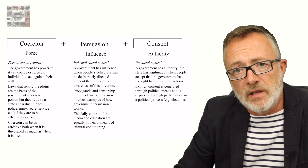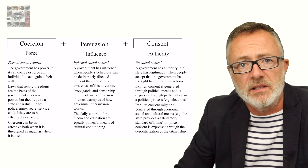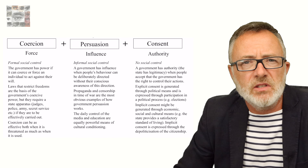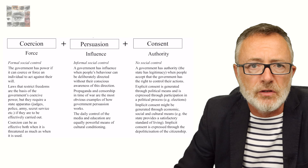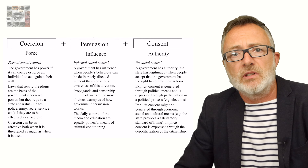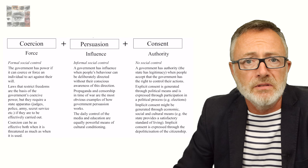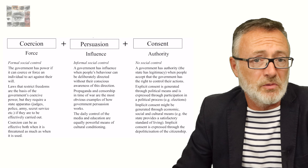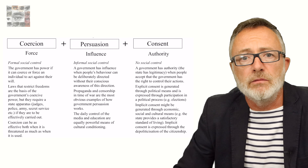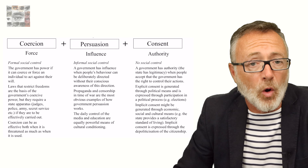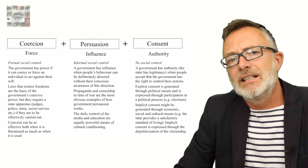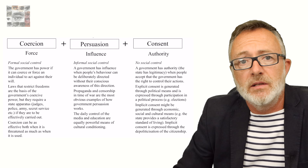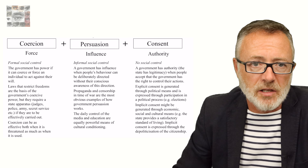The second form of consent is implicit — not explicit, implicit. Implicit consent can be generated through economic and social means. The state provides a satisfactory standard of living, and citizens accept the control of the state because the state satisfies their material needs. Implicit consent is expressed through the depoliticisation of the citizenship — through apathy and ignorance about the way in which the political process works. So if the state can make its citizens indifferent to the existence of the state and its power, then it is altogether easier to exercise that state power.